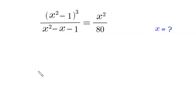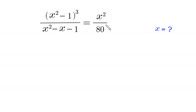Hello everyone, welcome to how to solve this very nice algebra equation. The problem is: (x² - 1)³ divided by (x² - x - 1) is equal to x² over 80. Our job is to find all possible values of x.